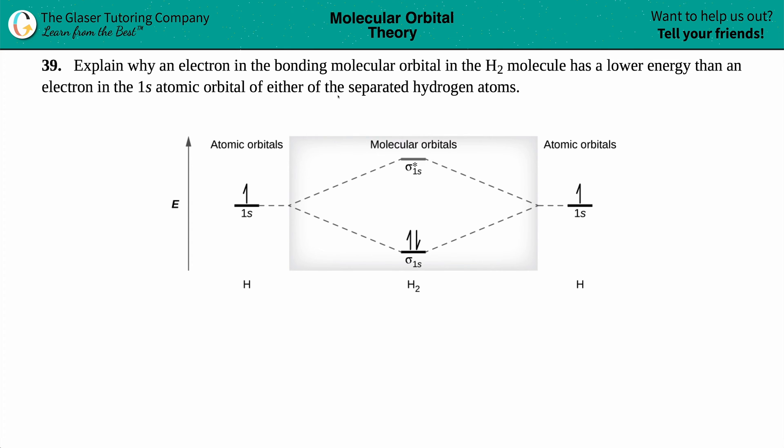Number 39, explain why an electron in a bonding molecular orbital in an H2 molecule has a lower energy than an electron in the 1s atomic orbital of either of the separated hydrogen atoms.